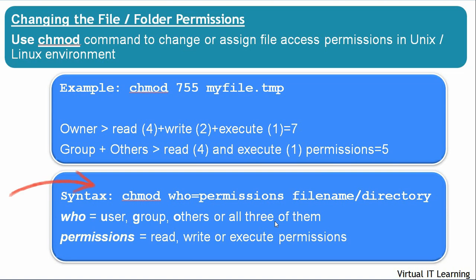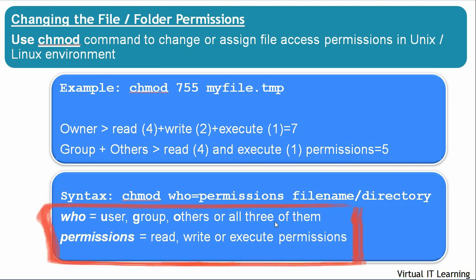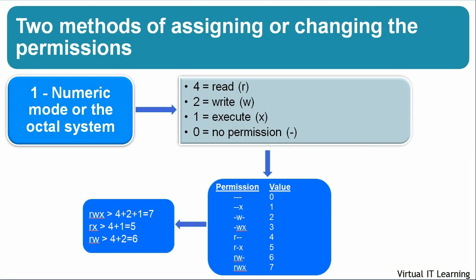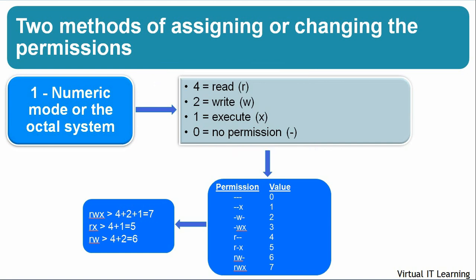Here is the syntax of the chmod command. In this syntax, 'who' refers to the user, group, or others, and permissions refer to read, write, or execute. There are two methods of assigning permissions. Method one is using numeric mode or the octal system: 4 equals read, 2 equals write, 1 equals execute, and 0 equals no permissions. Values add up when combined, ranging from 0 to 7. To assign permissions you add up the numbers accordingly.